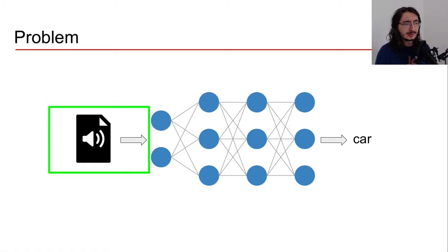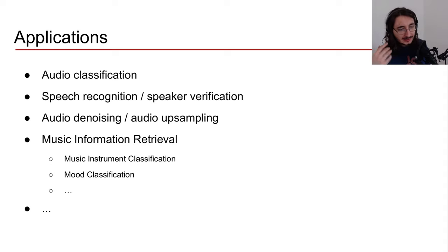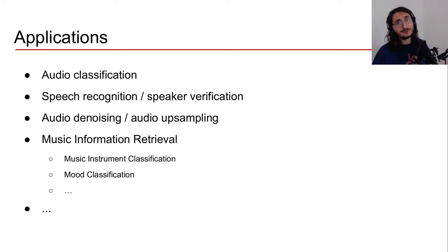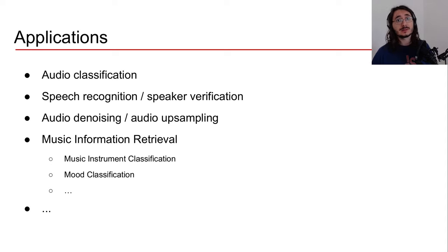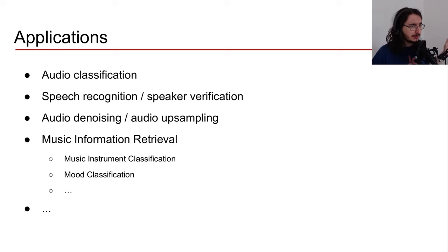Where do we use audio digital signal processing for machine learning and deep learning specifically? There are a bunch of applications in AI audio: obviously all sorts of audio classification problems, then speech recognition, speaker verification, speaker diarization, audio denoising, and audio upsampling. And if you're a music type of person, there's a whole field called Music Information Retrieval that uses tools from digital signal processing along with machine learning to tackle problems like music instrument identification, music mood and genre classification, and much more.